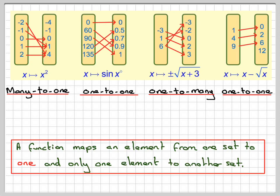For example, minus 2 is only mapped onto 4. And 2 is mapped onto 4. But it does follow that definition. A function maps an element from one set to one and only one element of another set. So many-to-one are considered to be functions.